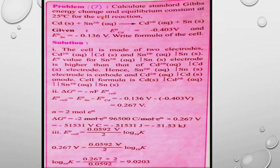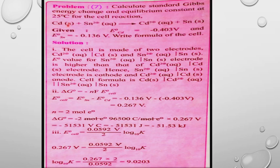Problem 7: Calculate the standard Gibbs energy change (ΔG°) and the equilibrium constant at 25°C for the cell reaction. The Gibbs energy is the energy of a system that can be converted into useful work. The cell reaction involves cadmium and tin.